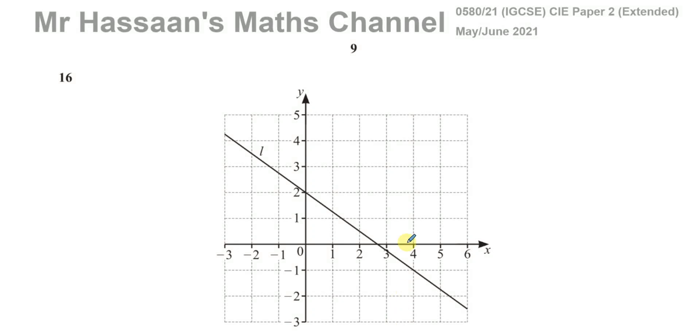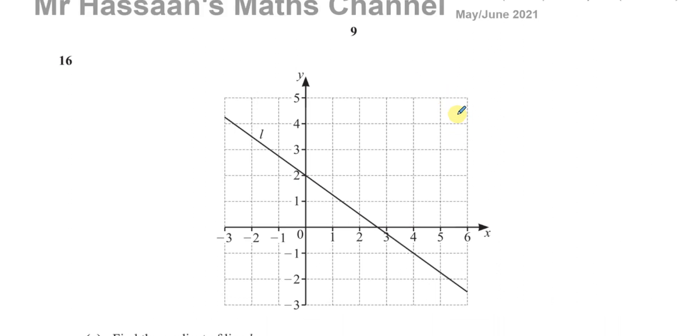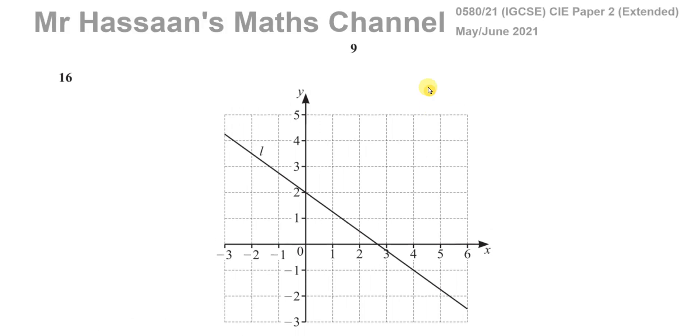Welcome back, this is Mr. Hassan's Math Channel and I'm now on question number 16 from the May-June 2021 International GCSE, IGCSE Cambridge, 0580 Paper 2 Variant 1. This is extended syllabus and this question is about straight line graphs. It's been requested by one of the students on the channel and he's actually requested part C, but for completeness sake, I will just do all of the questions A, B and C.